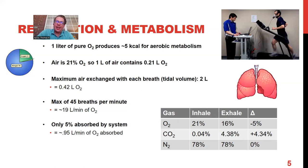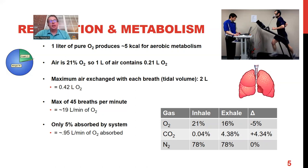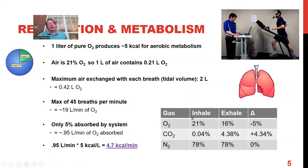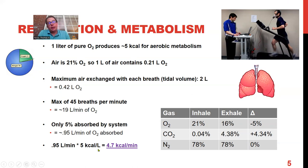Only 5% of that oxygen is absorbed — our lungs aren't perfectly efficient, but 5% is a good average. So what gets into the bloodstream is about 0.95 liters per minute. Taking that and going back to our association of 5 kilocalories per liter of oxygen, multiplied by 0.95 liters per minute, we get an interesting energy rate: 4.7 kilocalories per minute.